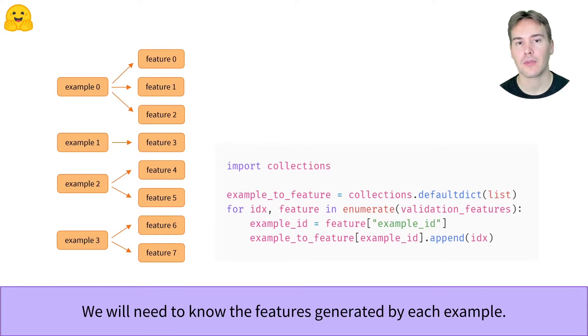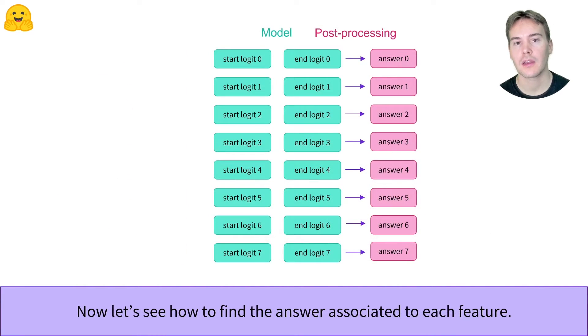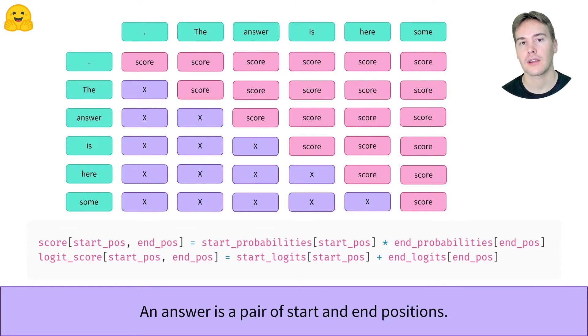First, we'll need a map from example to features, which we can create like this. Now for the main part of the post-processing, let's see how to extract an answer from the logits. We could just take the best index for the start and end logits and be done, but if our model predicts something impossible, like tokens in the questions, we'll look at more of the tokens.